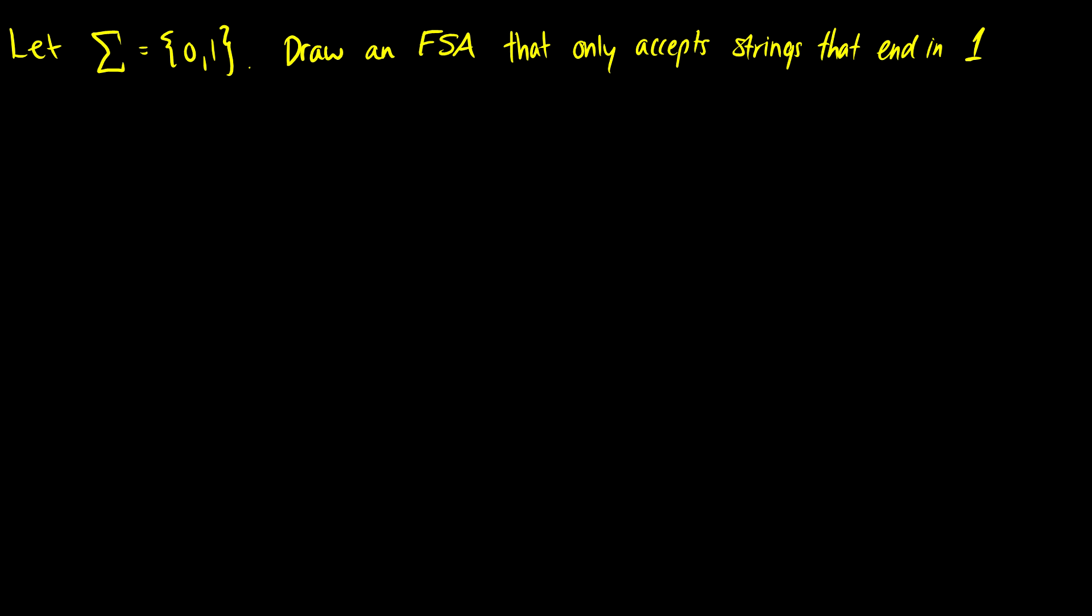In this video we're going to do some questions related to finite state machines. For the first question we're going to let our alphabet equal 0 and 1. We're going to draw a finite state machine that only accepts strings that end in 1.